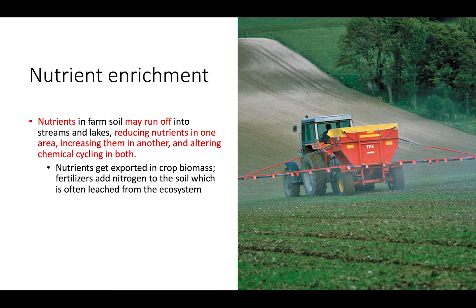Some examples of how nutrients can be taken out of an environment would be nutrients being exported in crop biomass. The crops will take up nutrients from the soil, and since we're removing them before they can decompose and return back into the ecosystem, we're taking nutrients out of that environment.